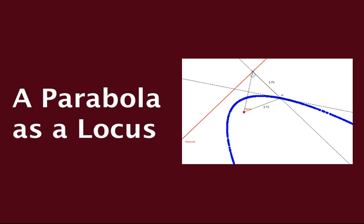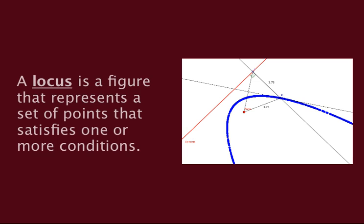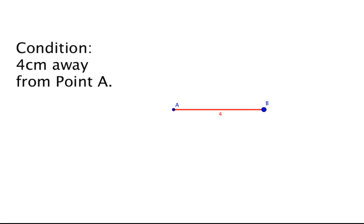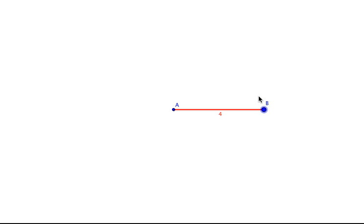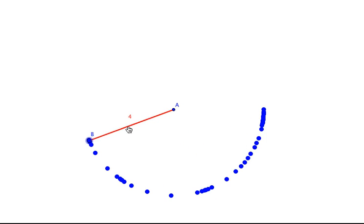In geometry, a locus is a figure that is a set of all points that satisfy one or more conditions. For example, let's say we have a given condition that each point in a locus has to be 4 centimeters away from point A. Well, the figure that represents this locus is a circle with a radius of 4 centimeters.